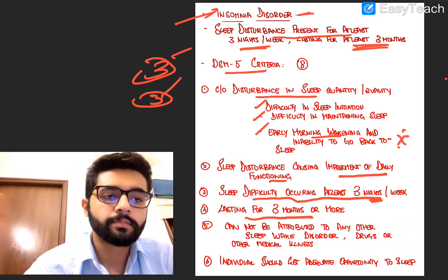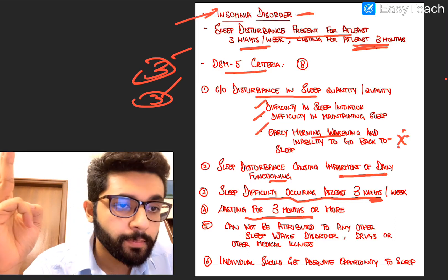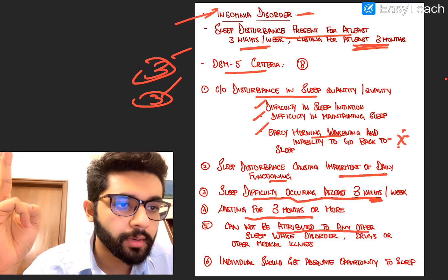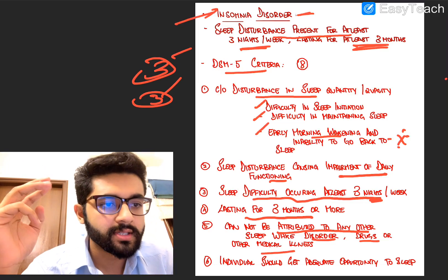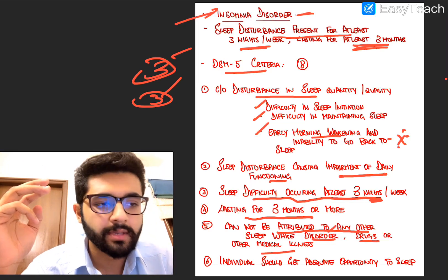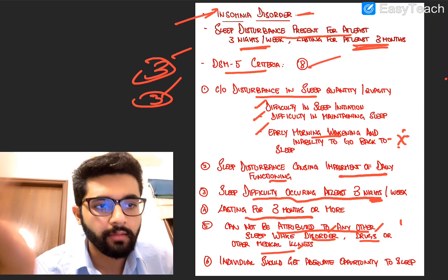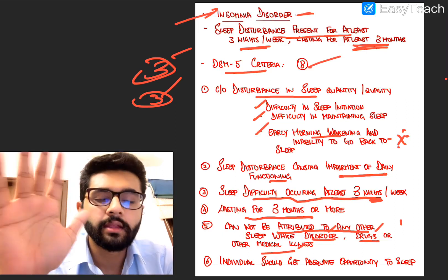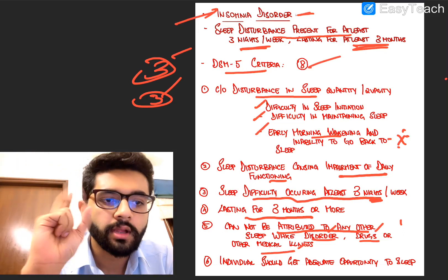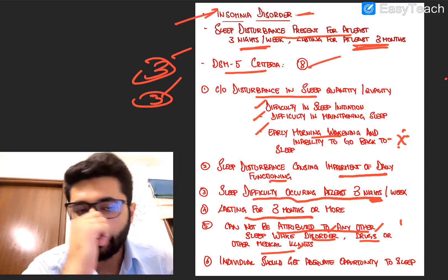Such disturbance of sleep — either quantity or quality, with impairment of daily functioning, occurring for at least three nights a week — must persist for more than three months, and it should not be attributable to any other disorder, drugs, or other medical illness. Sleep disorders, drugs, and other mental illness are each individual exclusion points, which is how the criteria reaches eight points.